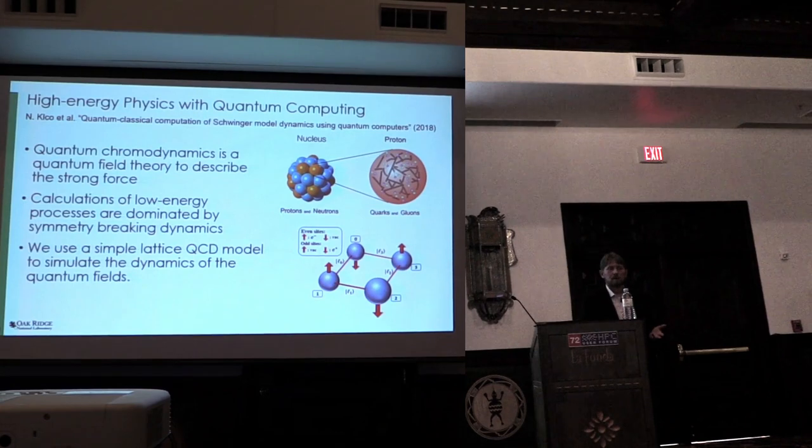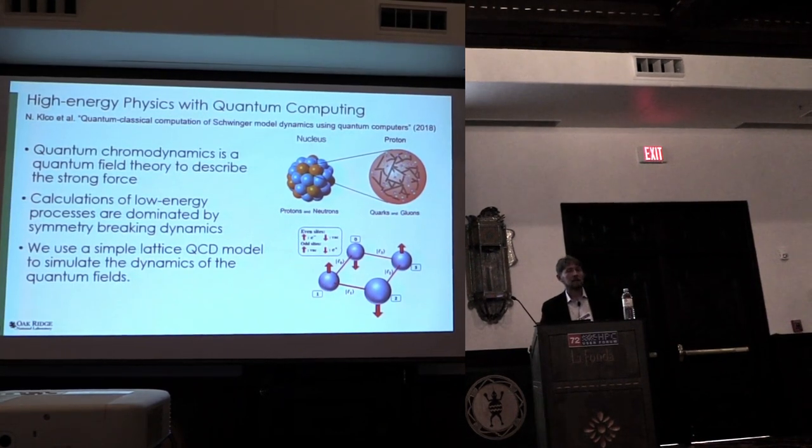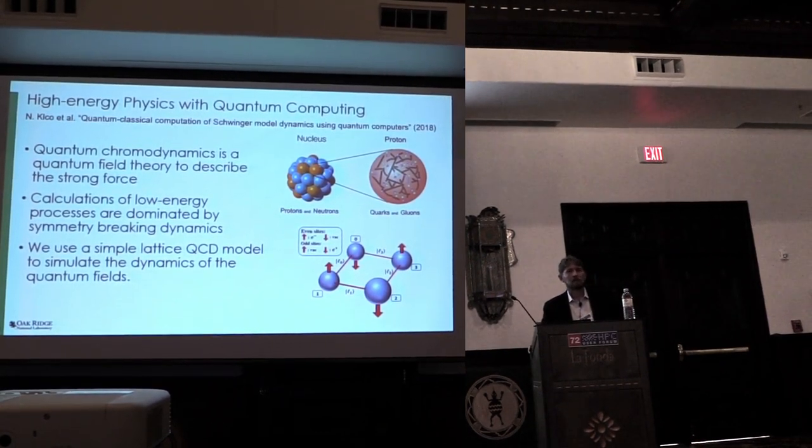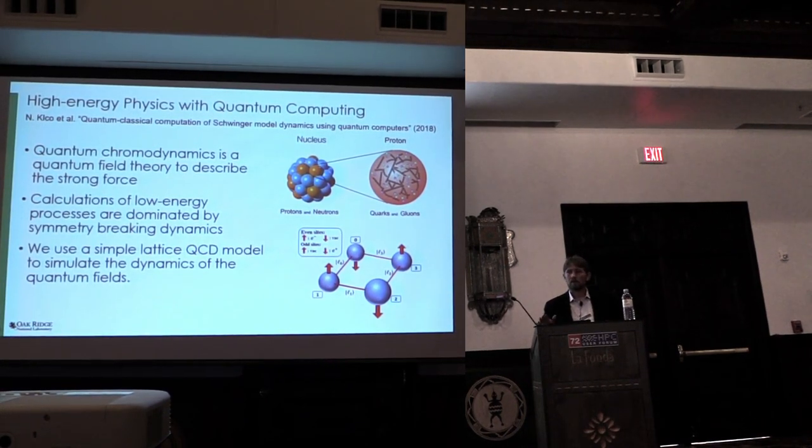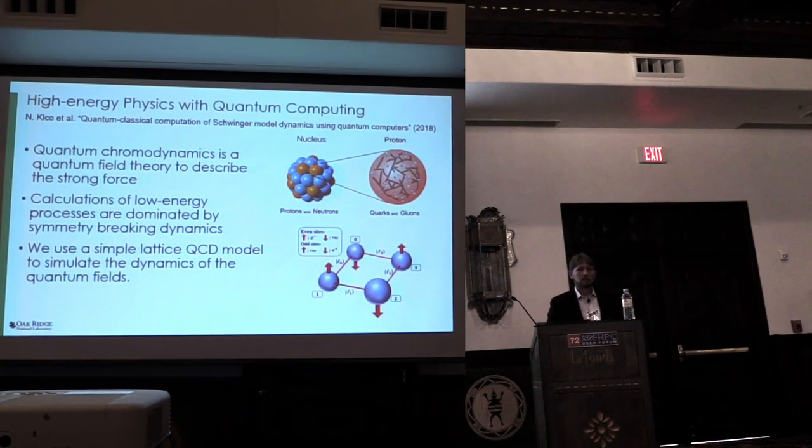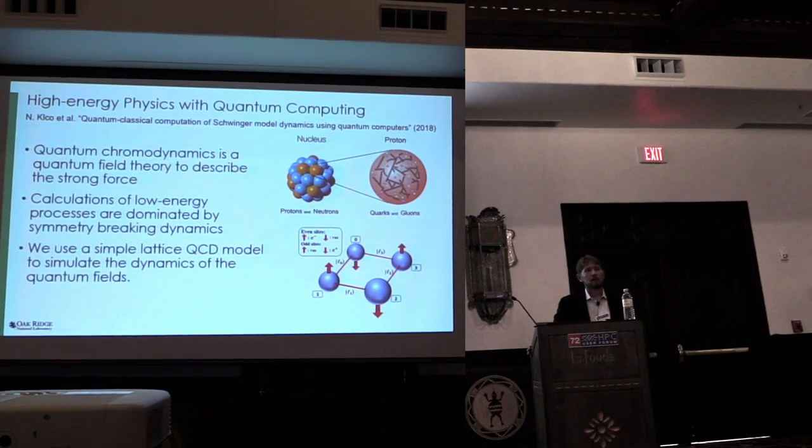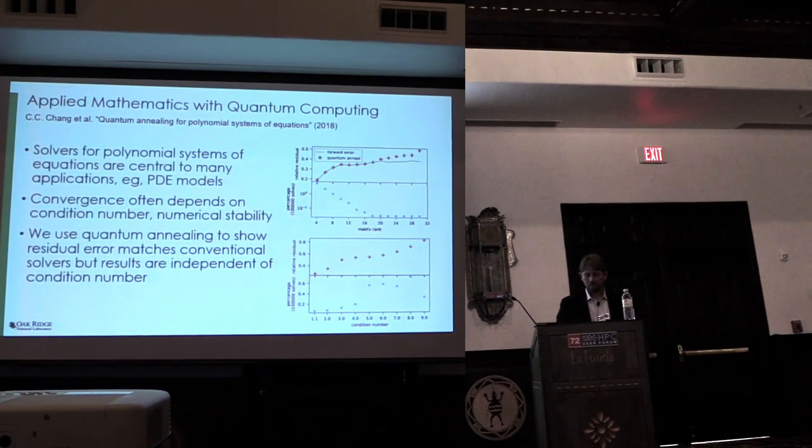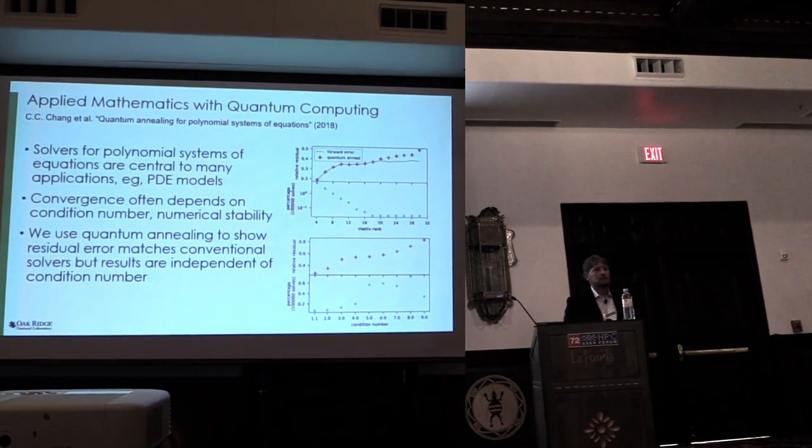We're doing similar work with high energy physics. Here, quantum chromodynamics is a theory that's extremely complicated and difficult to simulate in part because of multiple energy and time scales. We're actually looking at low energy processes that are dominated by symmetry breaking where we can do small examples in which this superposition, this distribution of the possible state can be queried and sampled through the quantum computing methods. In fact, we're able to predict the dynamics of a very simple quantum chromodynamic lattice model.